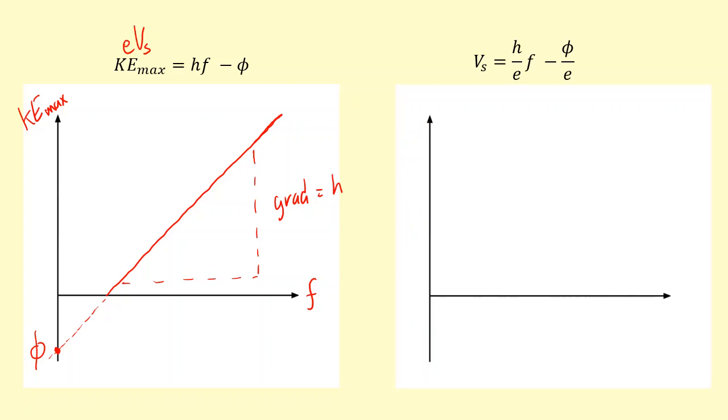Alternatively, you might want to plot the stopping voltage on the y-axis and the frequency on the x-axis, in which case you'll get something very similar. Here you have the gradient equal to Planck's constant over the charge of the electron, and you've got an intercept of work function over charge.